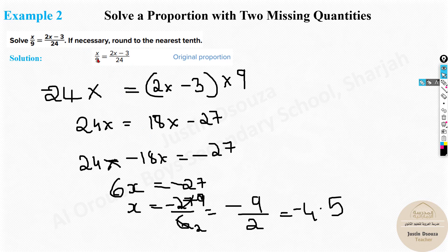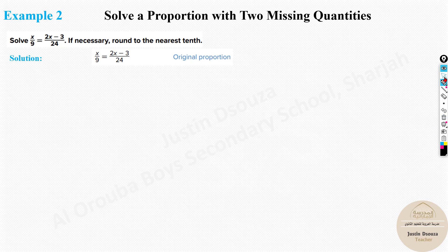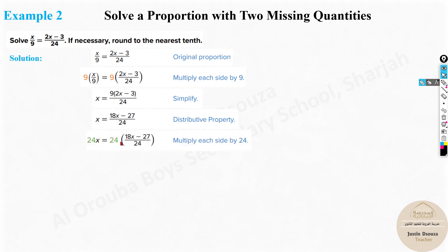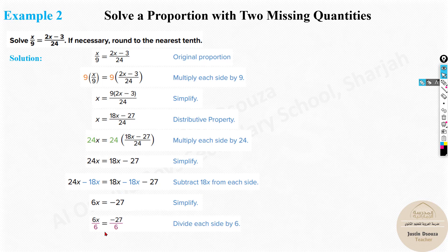Just remember: whenever there is a bracket with two terms, multiply inside both terms — distributive property. So 9 times 2x is 18x, and 9 times negative 3 is negative 27. In the step-by-step method, first remove the 9 by multiplying both sides by 9, leaving x equals 9 times (2x minus 3). Then take 24 to the other side and subtract 18x from both sides, then divide by 6 to get the answer.